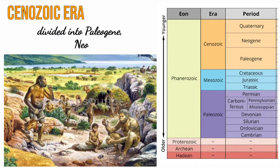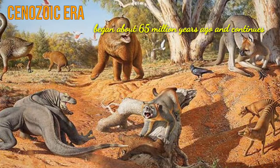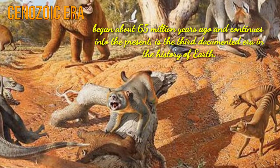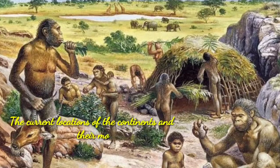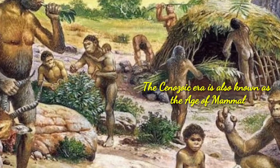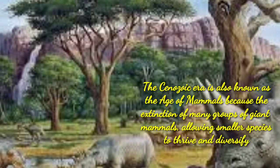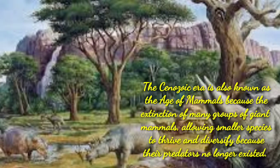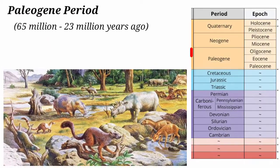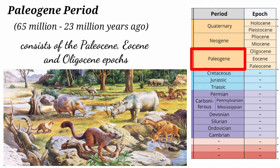The Cenozoic era is divided into three periods: the Paleogene, Neogene, and Quaternary periods. This era began about 65 million years ago and continues into the present, and is the third documented era in Earth's history. The current locations of the continents and their modern-day inhabitants, including humans, can be traced to this period. The Cenozoic era is also known as the Age of Mammals. The Paleogene period existed 65 million to 23 million years ago and consists of the Paleocene, Eocene, and Oligocene epochs.